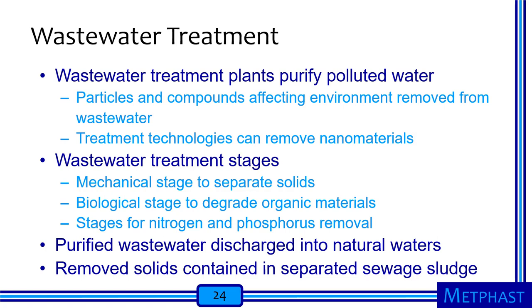Wastewater treatment plants purify polluted water by removing particles and compounds affecting the environment. Most treatment technologies can remove most types of nanomaterials. Stages include a mechanical stage to separate solids, a biological stage to degrade organic materials such as sewage, stages for nitrogen and phosphorus removal — which can be harmful for surface waters if not treated — and finally, purified wastewater is discharged into natural waters while removed solids are contained in separated sewage sludge.